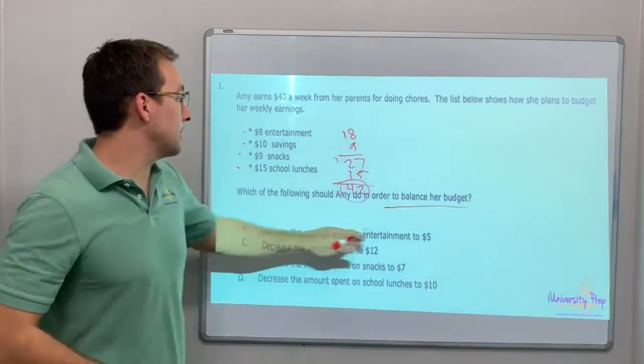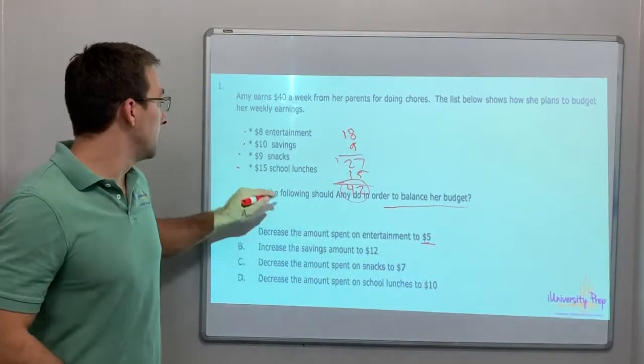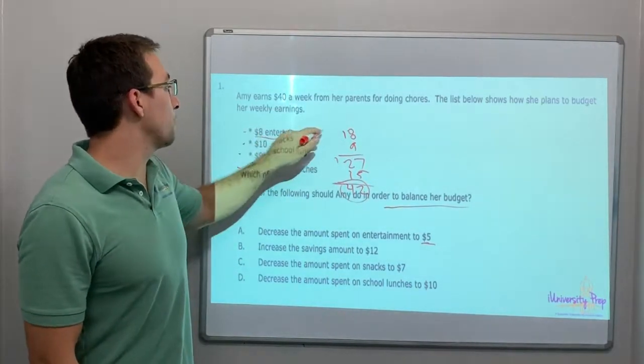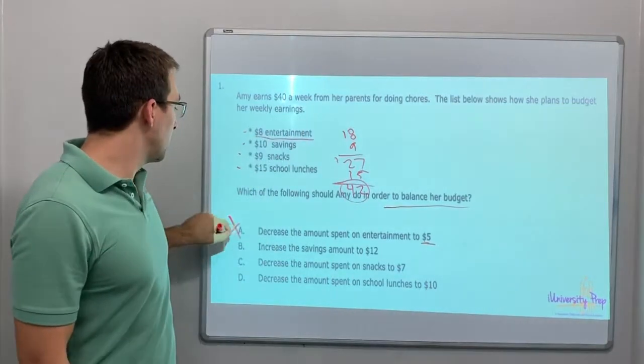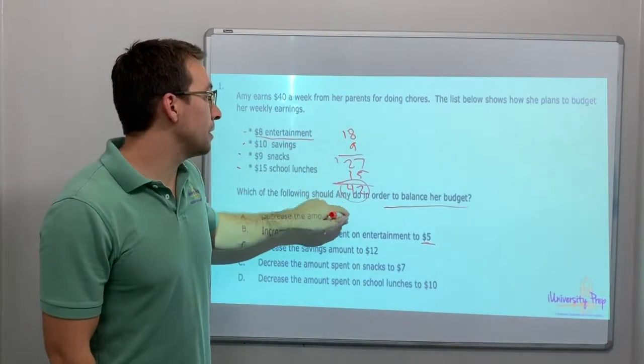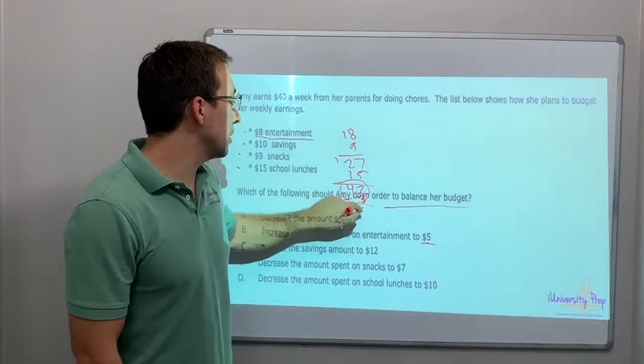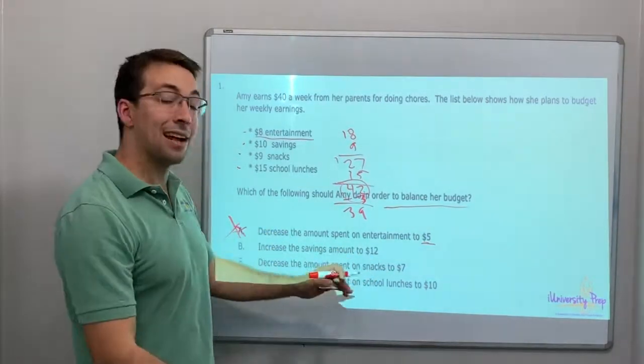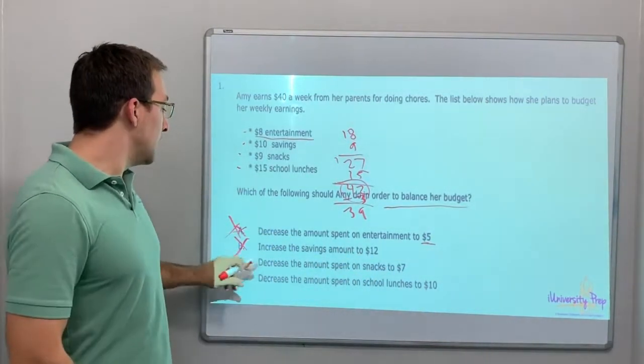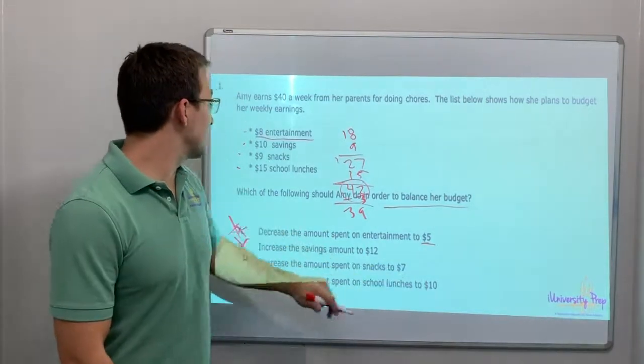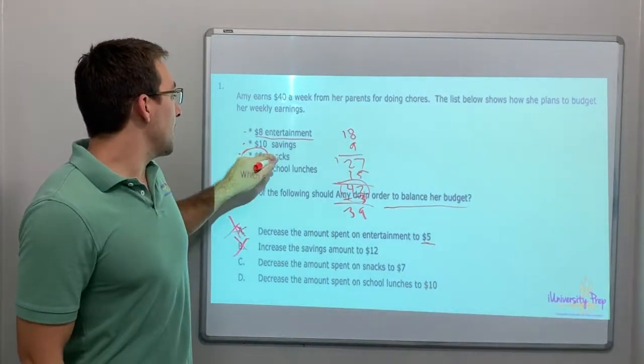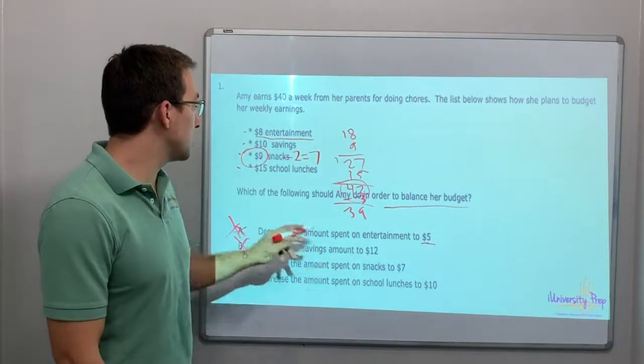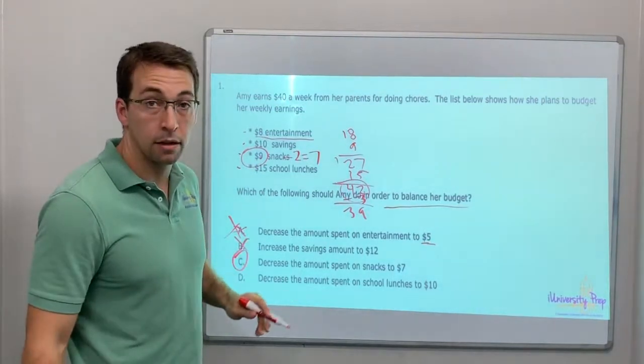Decrease the amount spent on entertainment to $5? That would take it down to $39. $8 to $5, that's minus $3, so $42 minus $3 is $39. That's not what we want, we want $40. Increase savings? No, you cannot spend more money. Decrease the amount spent on snacks to $7? That's it. 9 minus 2 equals 7. Decrease the amount spent on school lunches to $10? That's minus 5. C is our answer.